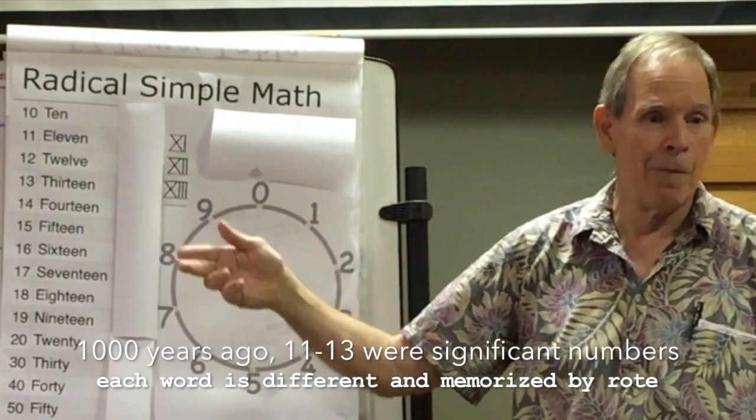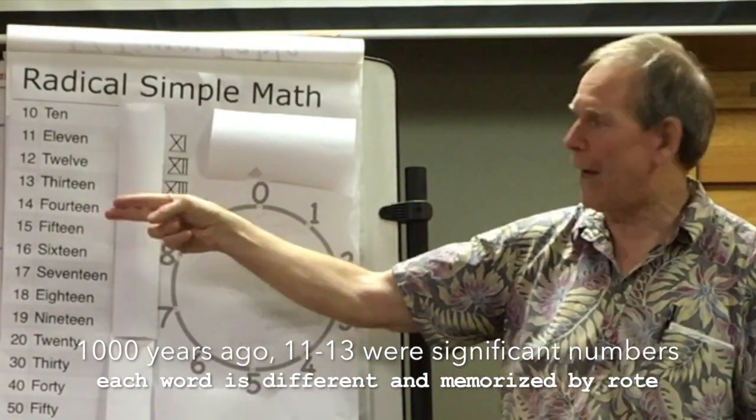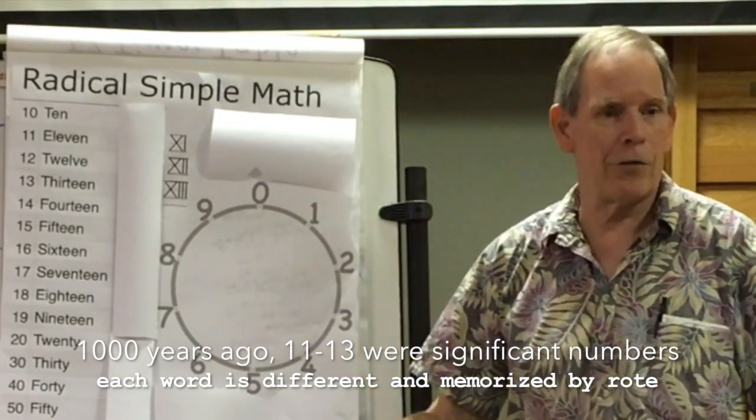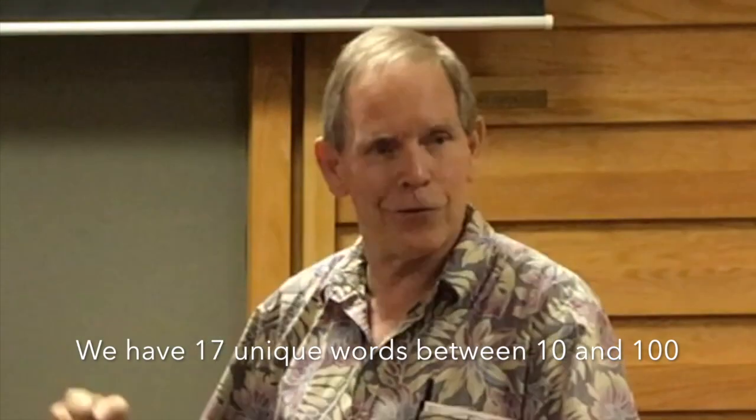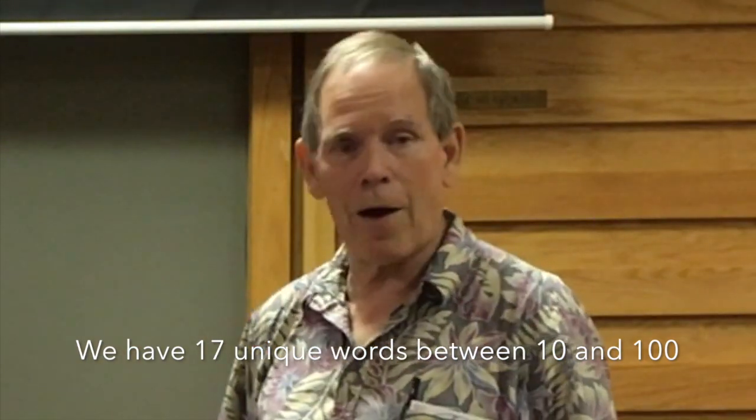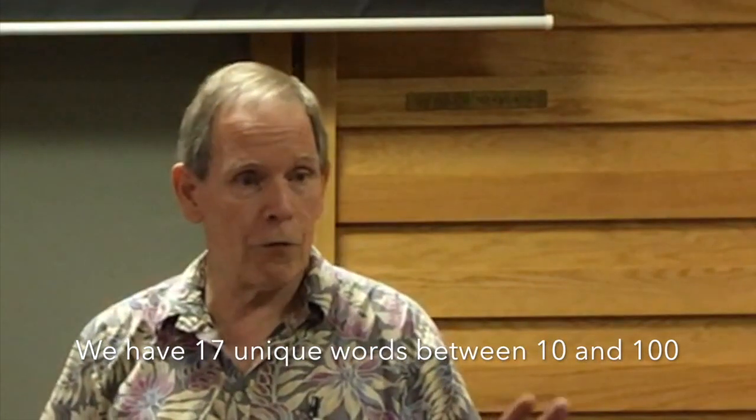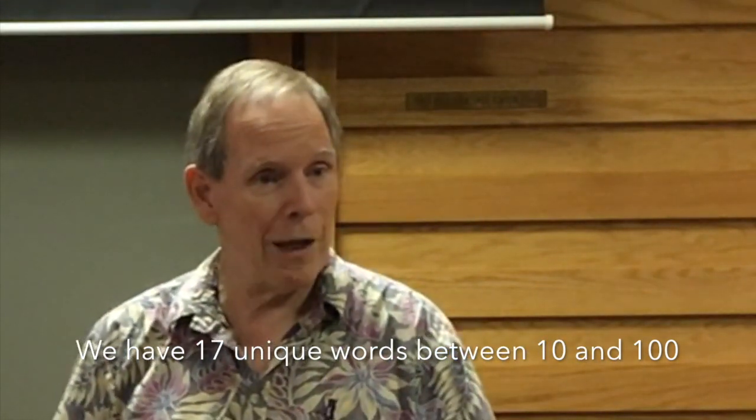So thirteen is sort of a bastardization of three and a bastardization of ten. And we have kids memorize it. So there's like this number line that kids are in, and they get to ten and that's fine. And over the world, it's ten is what is fine. Kids reach ten about the same age.